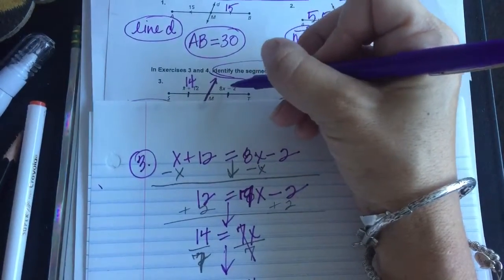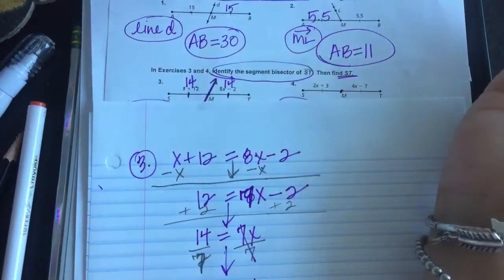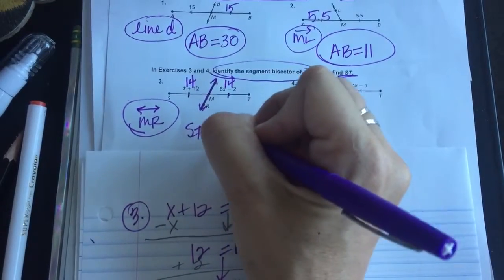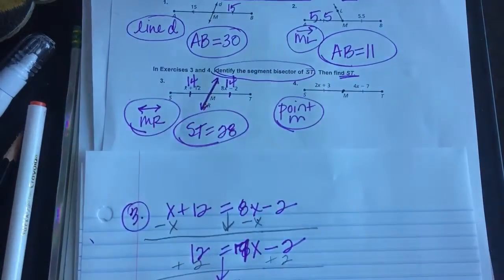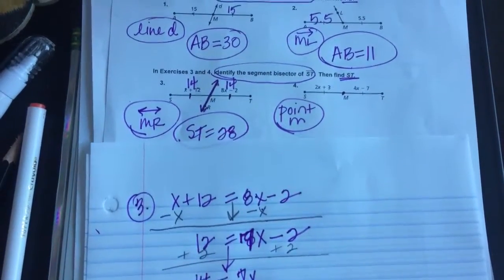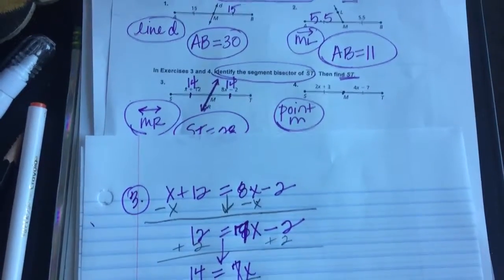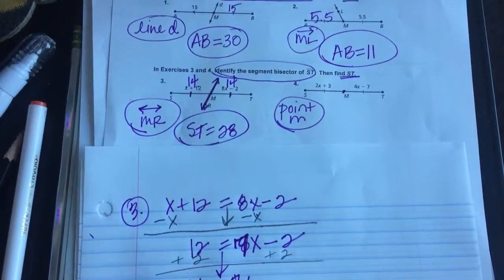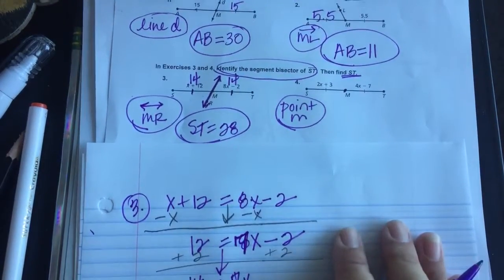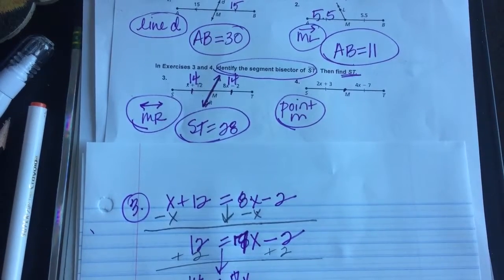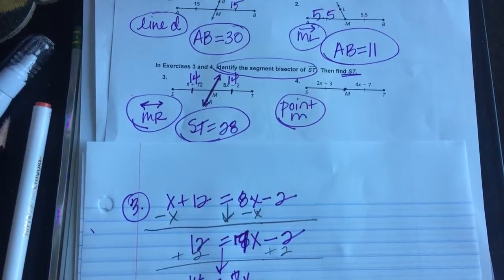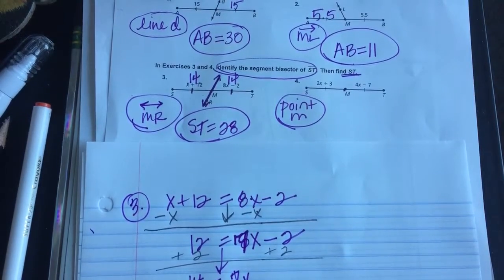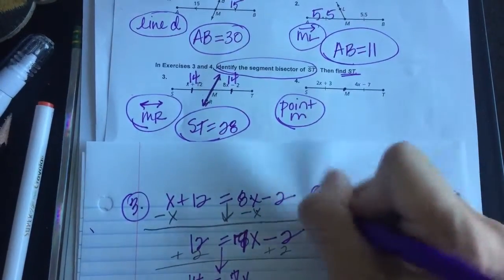Checking: 8 times 2 is 16, minus 2 is 14 — good. So s to t is 14 + 14 = 28. Make sure you follow through — solve for x and then go back and use it. There's a lot going on in that problem: you've got multiple steps, you've got to make sure you're reading your directions. If you only did half of that, you would have gotten half credit on your quiz.